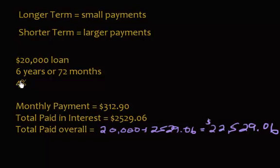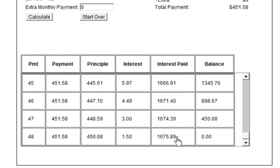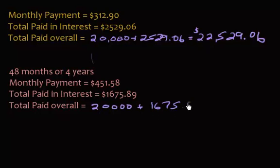Now let's compare with the shorter loan. Changing back to forty-eight months at four percent, the payment goes back up to four hundred fifty-one dollars. But notice the interest paid is a lot less — one thousand six hundred and seventy-five dollars and eighty-nine cents. The total paid overall is the twenty thousand dollar loan you have to pay back no matter what, plus sixteen hundred seventy-five and eighty-nine cents in interest.